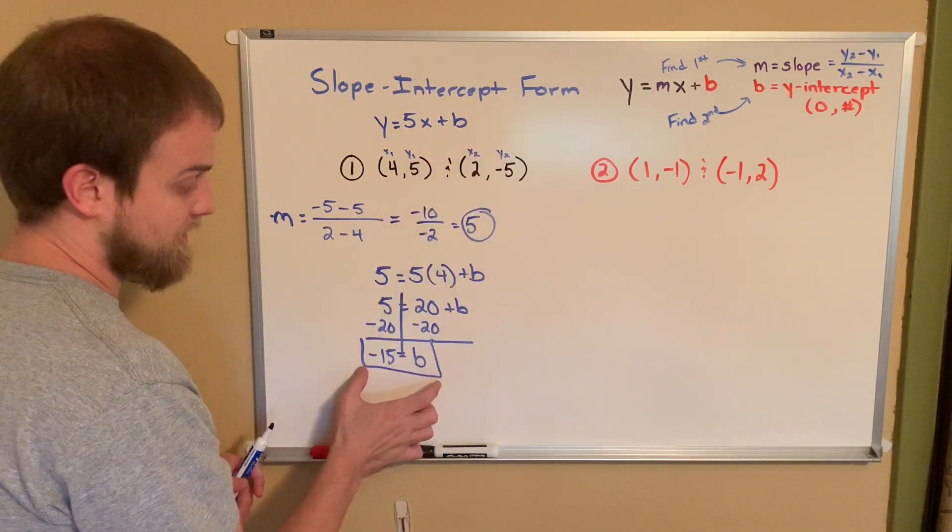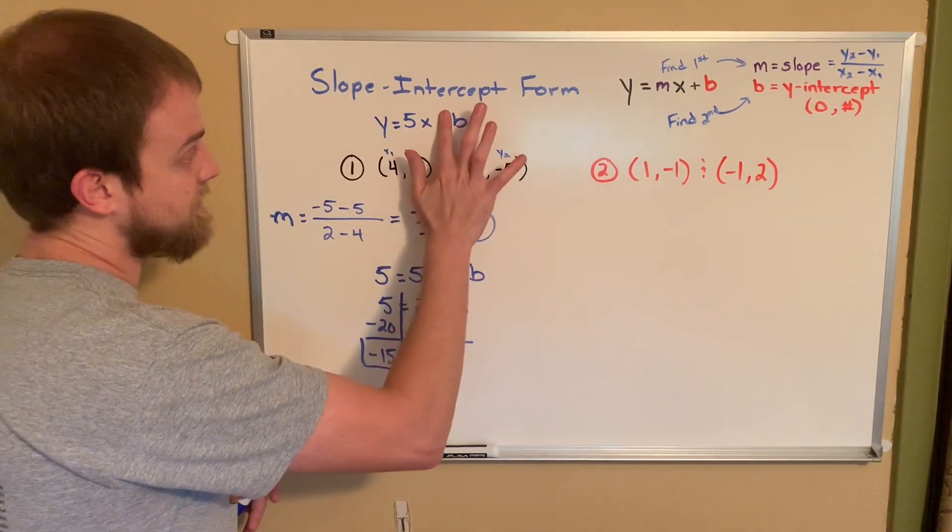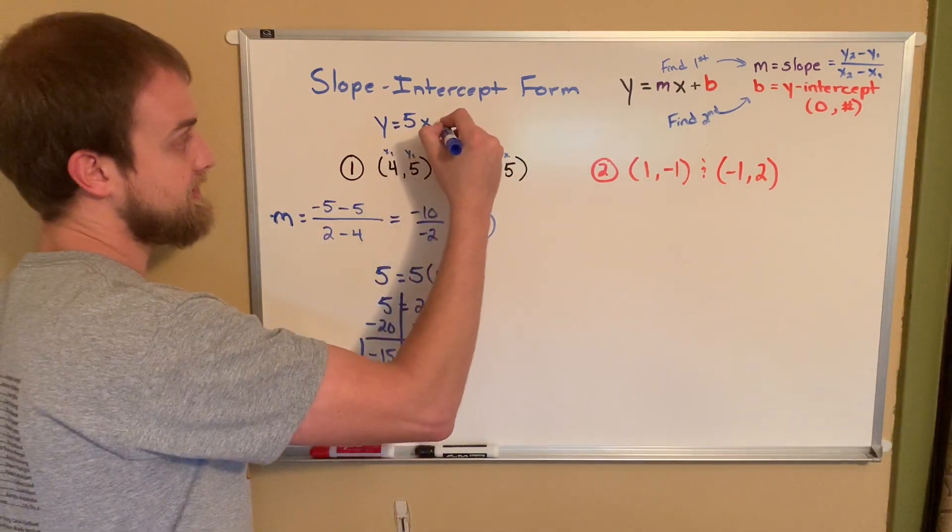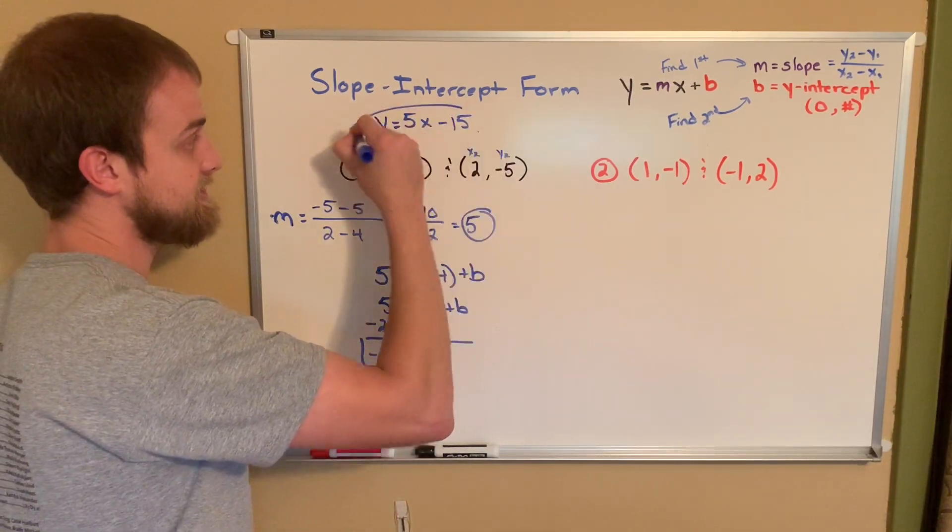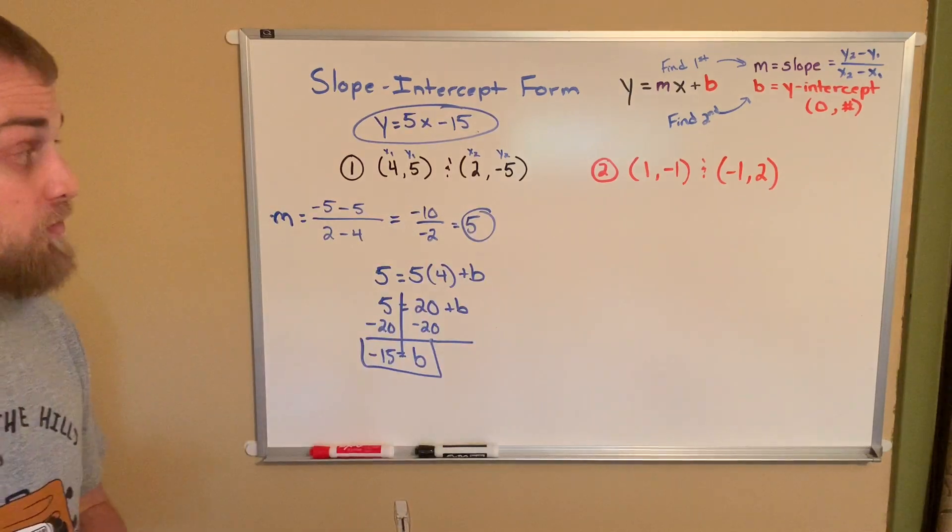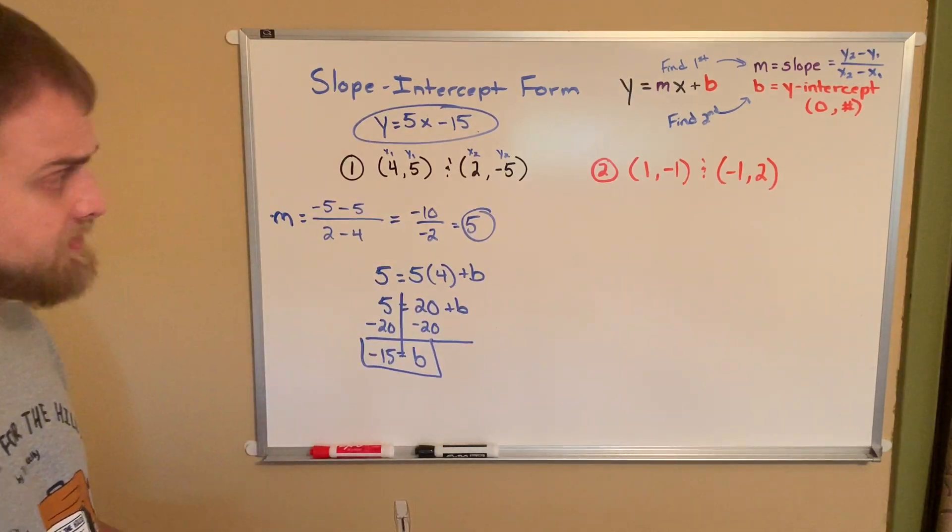So I found the slope and then I used an idea that we talked about earlier to find my y-intercept. Now my y-intercept is negative 15. So I'll come back up here. I'll erase my plus b and I'll write negative 15 in its place. And there's my equation in the slope-intercept form.